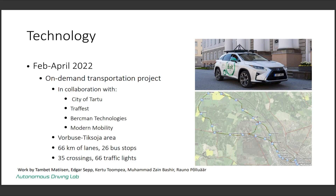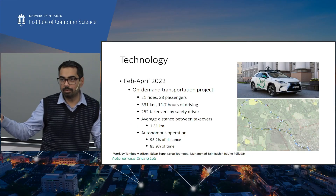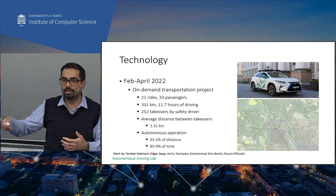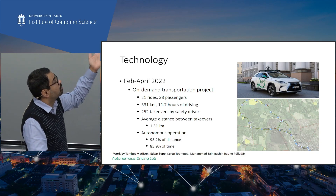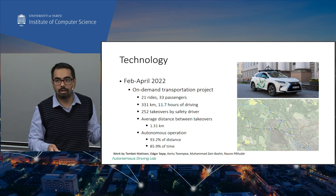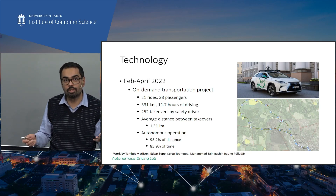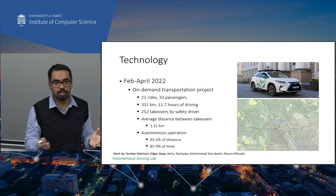Last year we ran an on-demand transportation project in spring 2022. Our vehicle became part of the transportation fleet in the suburbs of Tartu, in partnership with the city of Tartu, Trafest, Berkman Technologies, and Modern Mobility. The track was 66 kilometers of lanes and 26 bus stops. We offered rides to real passengers — people who actually requested a ride from the city of Tartu. We drove 331 kilometers, with the autonomy having to be disengaged 252 times.